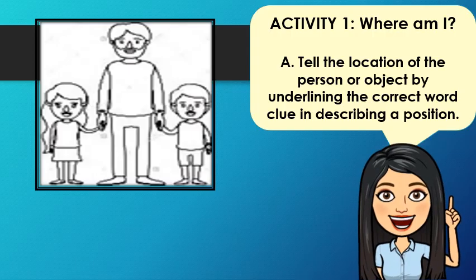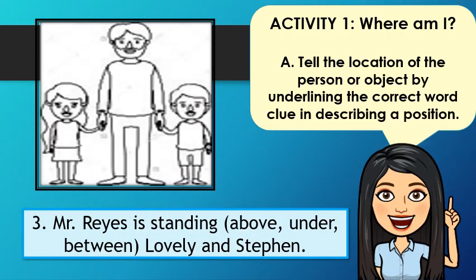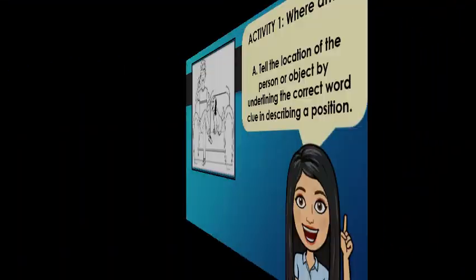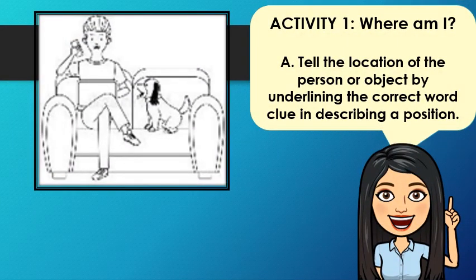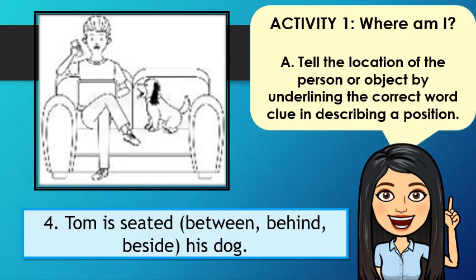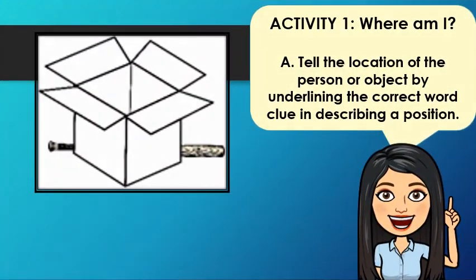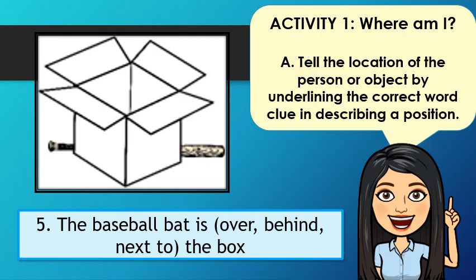Number 3: Tell the location of Mr. Reyes. Mr. Reyes is standing (above / under / between) Lovely and Stephen. Number 4: How about the location of the man? Tom is seated (between / behind / beside) his dog. Number 5: The baseball bat is (over / behind / next to) the box.